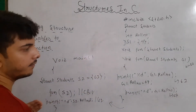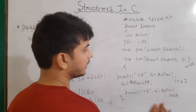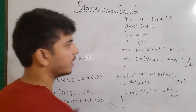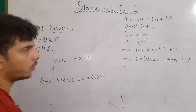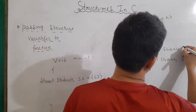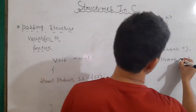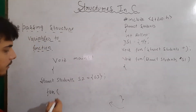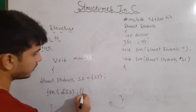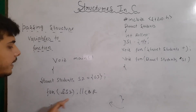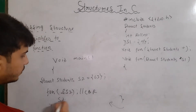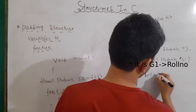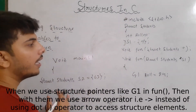If you don't know about call by value and call by reference, you can check out that video by clicking the i button. Now let's talk about the call by reference method. To send values using call by reference, we use a pointer. So here, instead of writing struct students, I have to write struct student asterisk, and here also I will be writing asterisk g1. Then I'll call our function and send the reference of our s2 variable — that is ampersand s2. This is the call by reference method. Now g1 and s2 will be pointing to the same memory location.